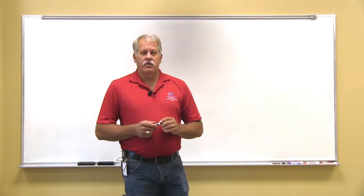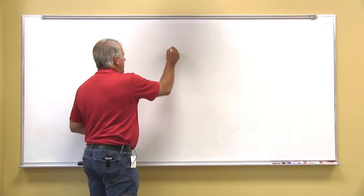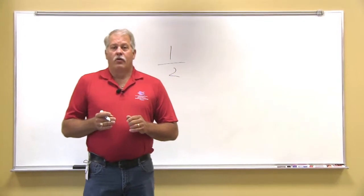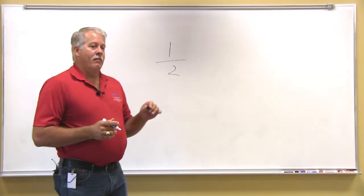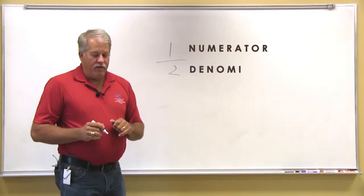When dealing with fractions, there are a couple things that we need to know. First of all, when you have a fraction, you have a number that's over a particular number. You need to realize that the top number is the numerator. The bottom number is the denominator.